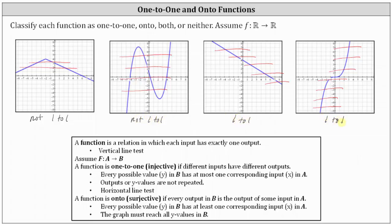More specifically, if we have a function that maps from A to B, a function is one-to-one or injective if different inputs have different outputs. Or we can say every possible y value in B has at most one corresponding input x in A. We can also say outputs or y values are not repeated. For the two graphs on the left, notice how y values are repeated, which is why the horizontal line intersects the graph in more than one point.